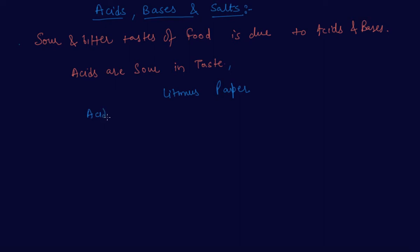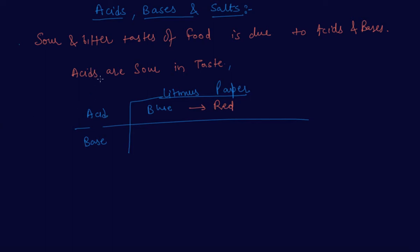Now I will write acid and base, and tell you the effect of acids and bases on litmus paper. Acid turns litmus paper from blue to red. Whereas bases are bitter in taste, and they change the color of litmus paper from red to blue — opposite to what acid does.